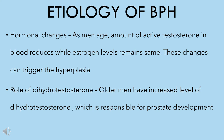Etiology of benign prostatic hyperplasia. The etiology of BPH is influenced by a wide variety of risk factors, in addition to direct hormonal effects of testosterone on prostate tissue. As men age, the amount of active testosterone in blood reduces while estrogen levels remain the same. These changes can trigger hyperplasia.